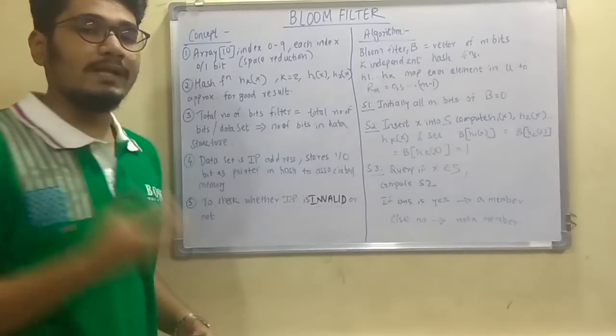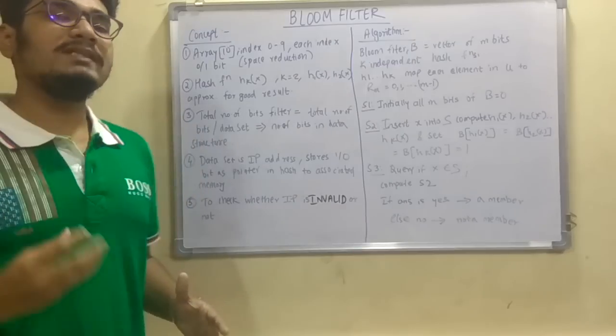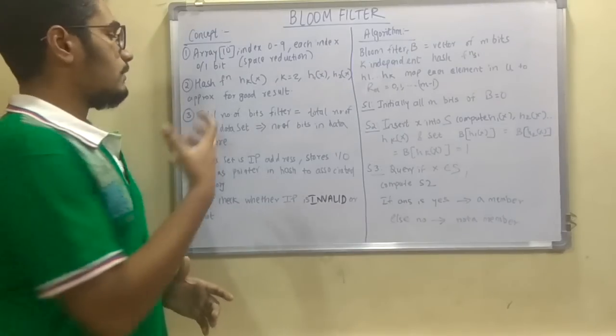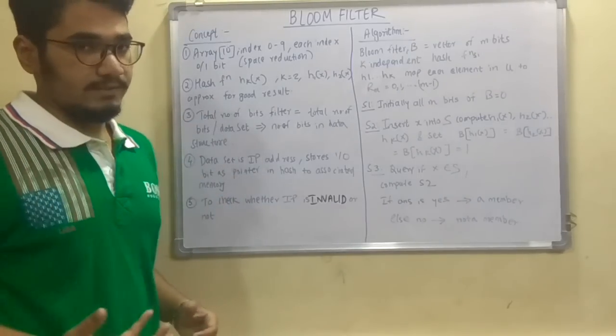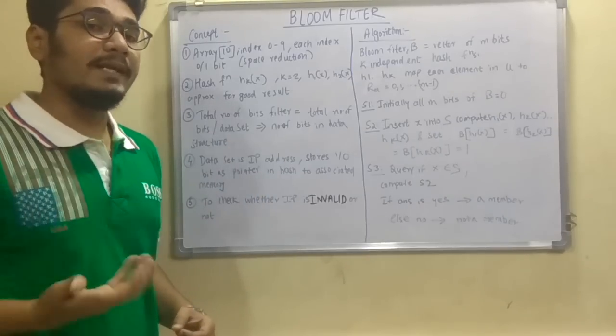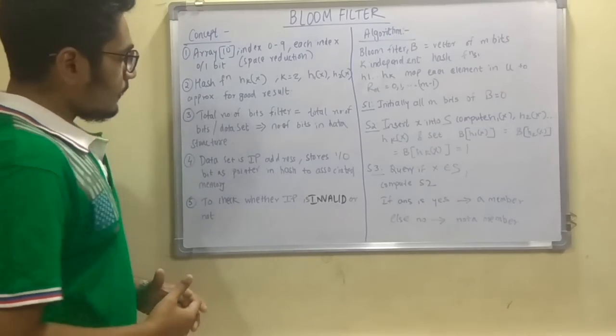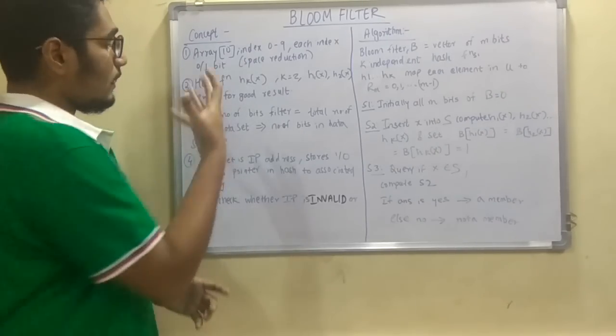Next we have the total number of bits in the filter. Now this filter will contain a number of bits. So these bits will be the amount of bits per dataset, or it can be the number of bits that will be in the data structure.